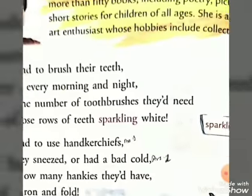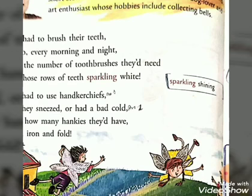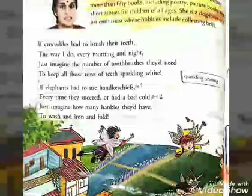Now let's start our lesson — Lesson 5: Just Imagine. This lesson is written by the poet Sandini Govindan. She is a widely published, award-winning author of children's literature in English. She has written more than 50 books, including poetry, picture books and short stories for children of all ages. She is a dog lover whose hobbies include collecting bells.